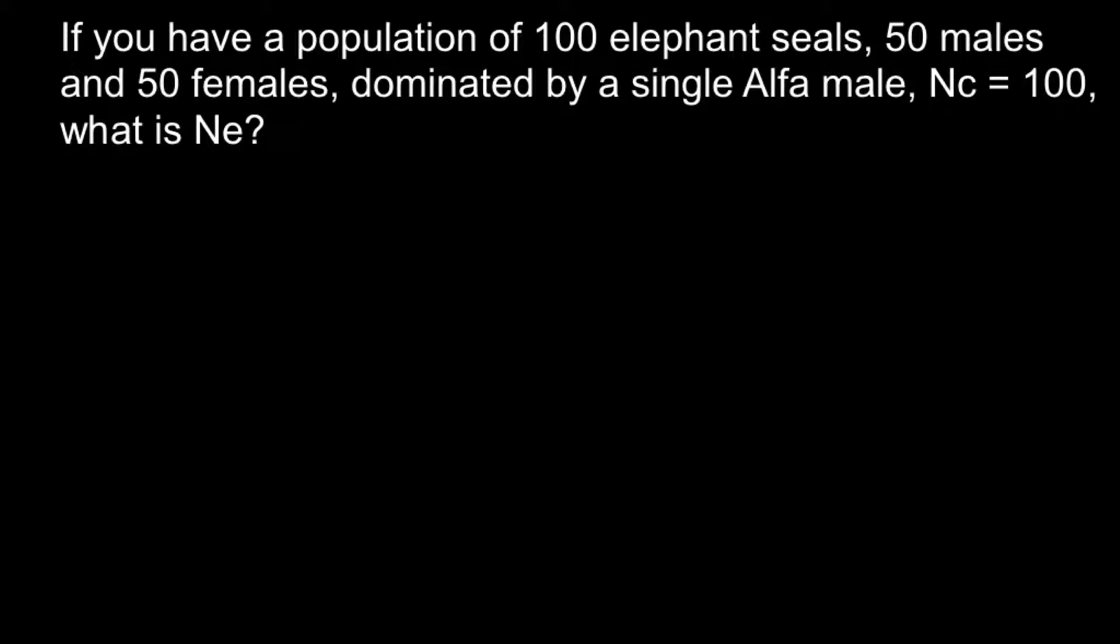Before I will show you how to solve this problem, I want you to understand the difference between NC and NE. So NC stands just for the total number of animals, and NE stands for the effective population size. And usually these numbers are never equal.